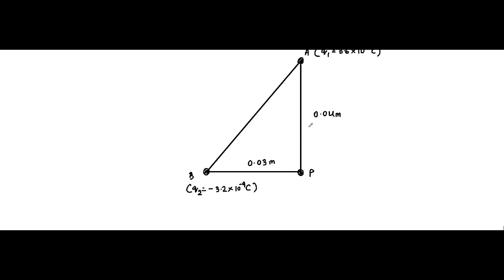As you can see, it is evident that this is a right angle triangle. By application of Pythagoras theorem, the hypotenuse will be √(0.03² + 0.04²) which equals 0.05 meter.